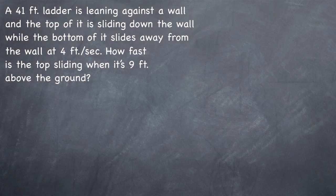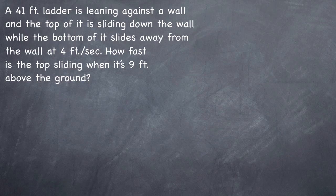The leaning ladder problem is another very common related rates problem. Despite the fact that we'll be using the Pythagorean theorem as our main equation, instead of the volume of a sphere as in the last example, the steps are the same. We'll start by writing down what we have and what we need. We'll set up our equation, take the derivative with implicit differentiation, then plug in and solve for our missing variable. Here's the problem. A 41-foot ladder is leaning against a vertical wall. The top of the ladder is sliding down the wall while its bottom slides along the ground away from the wall at 4 feet per second. Calculate how fast the top of the ladder is moving when it's 9 feet above the ground.